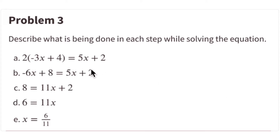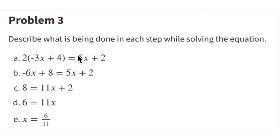This is problem number three. Describe what is being done in each step while solving the equation. The given equation is solved in four steps to get x = 6/11. In general, if you see something inside parentheses, you can get rid of them by distributing. Here they distribute the 2 to -3x and to 4: 2 times 4 is 8.